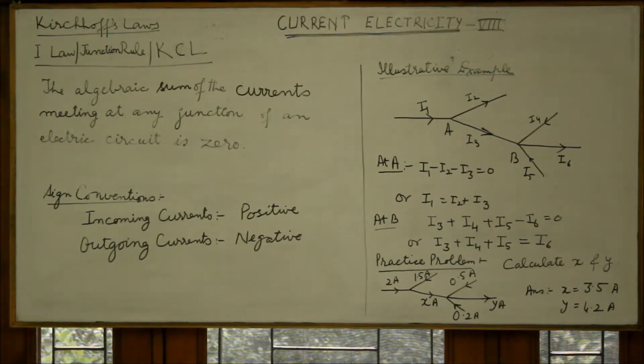Basically Ohm's law, which we have studied earlier in current electricity, gives a simple correlation between voltage and current and is useful for simple circuits alone. It fails to give us the values of current in complicated circuits.